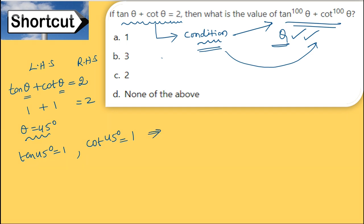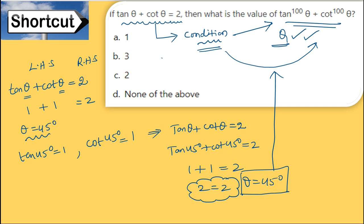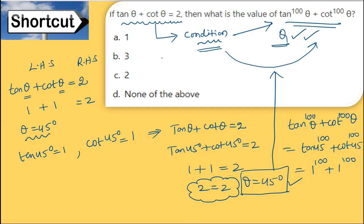Given tan θ + cot θ = 2, θ = 45°. The question asks: find tan¹⁰⁰θ + cot¹⁰⁰θ. Substituting θ = 45°: tan¹⁰⁰(45°) + cot¹⁰⁰(45°) = 1¹⁰⁰ + 1¹⁰⁰ = 1 + 1 = 2. So option 2 is correct.